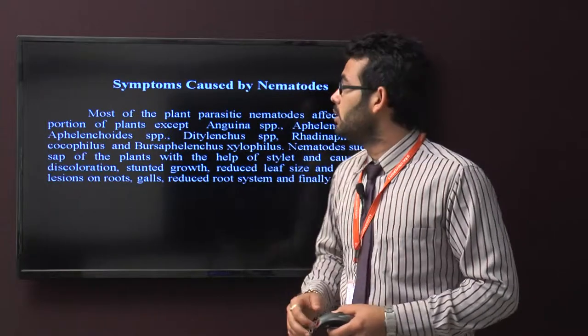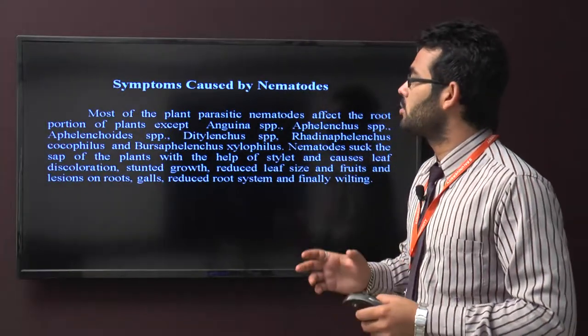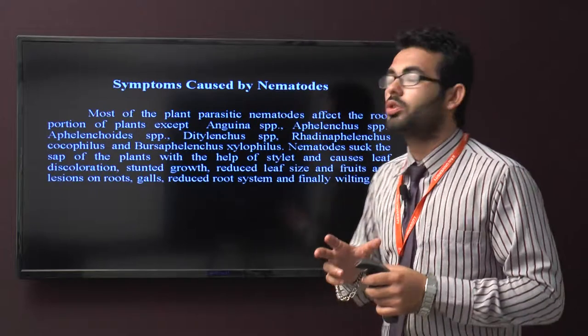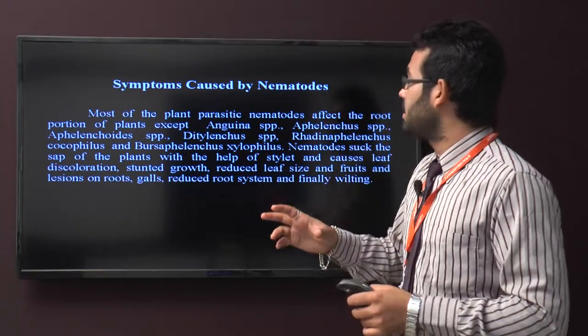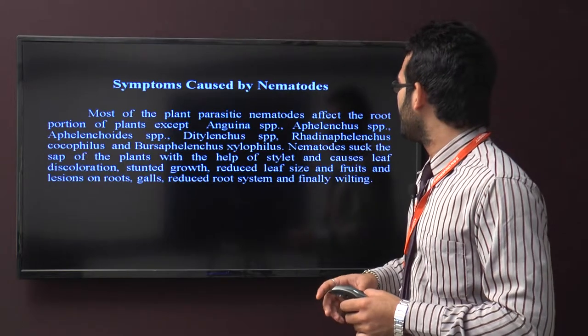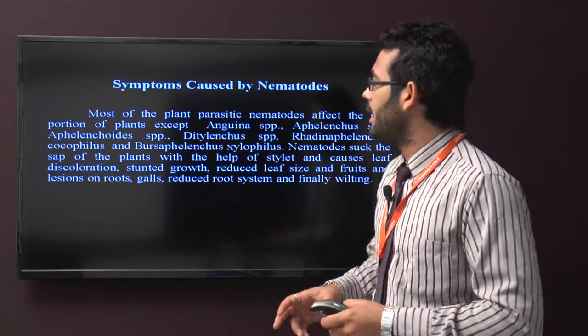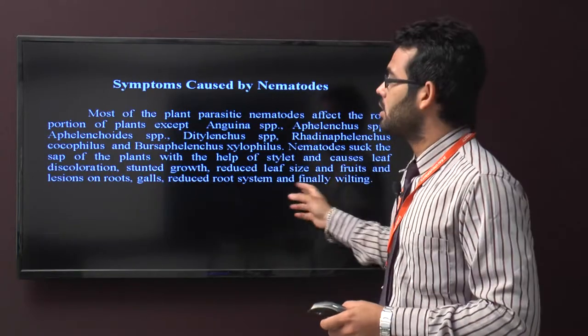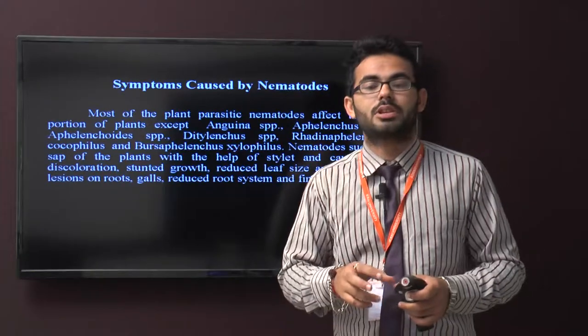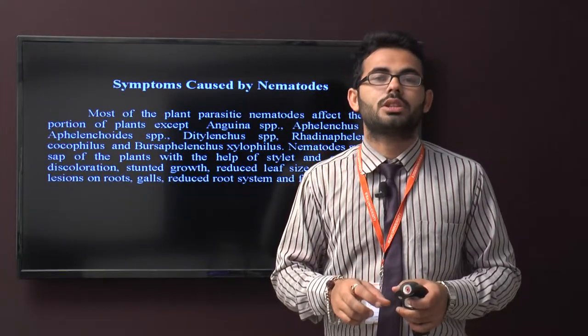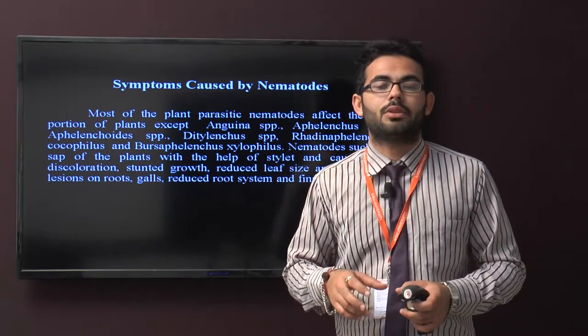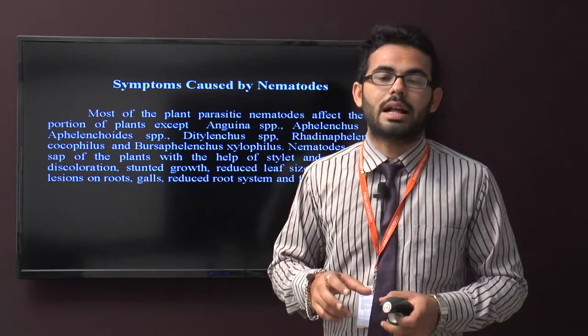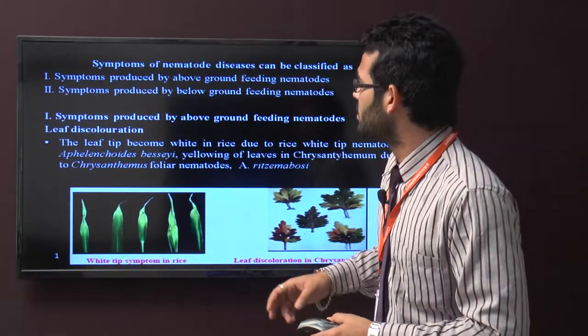Different symptoms caused by nematodes: Most plant parasitic nematodes affect the root portion of plants except Anguina species and Aphelenchoides species. The nematodes suck the sap of plants with the help of stylet and cause leaf discoloration, stunted growth, reduced leaf size and fruit, lesions on roots, and reduced root systems.